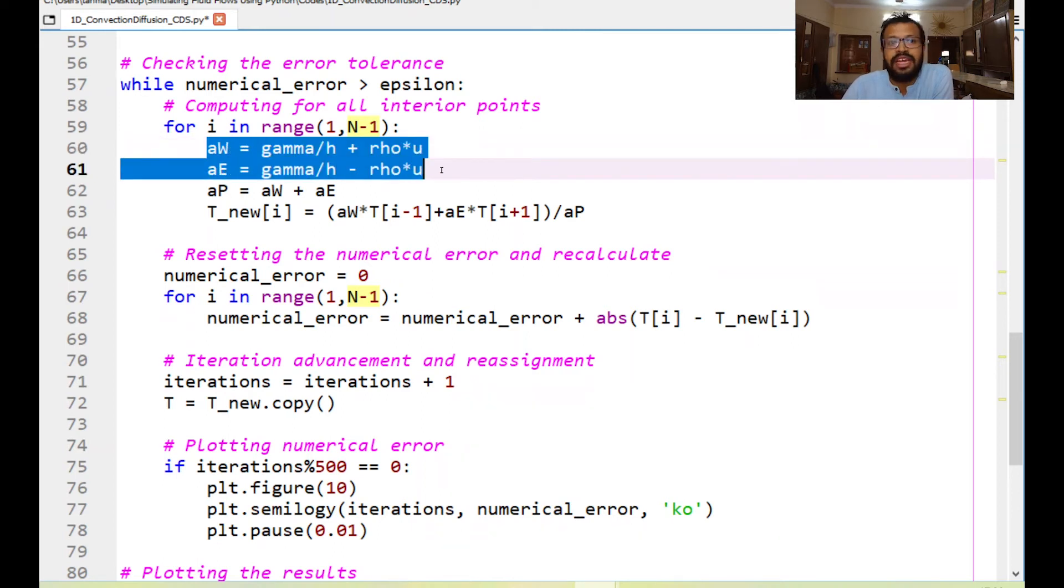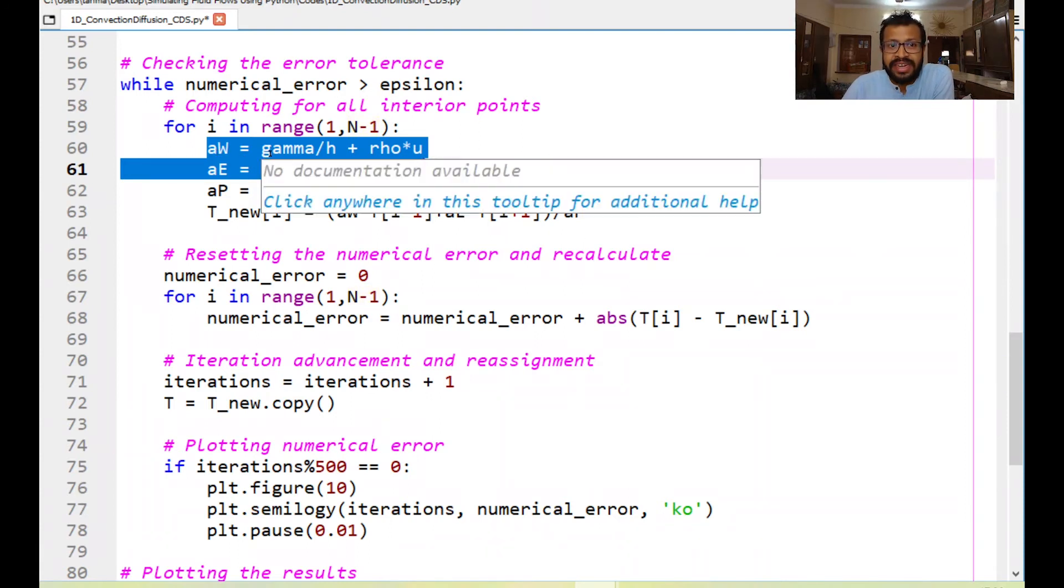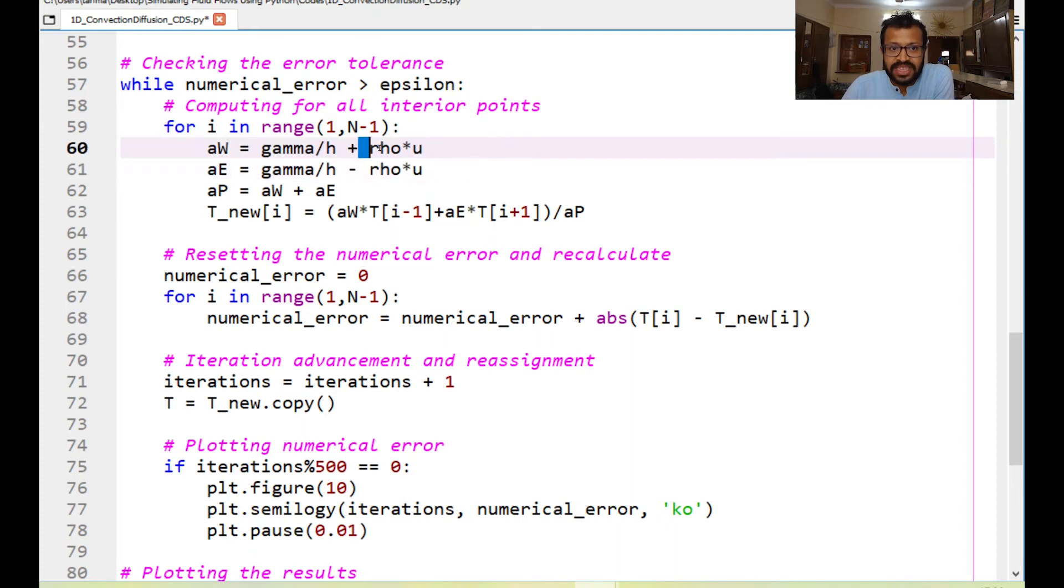So based on the previous lectures the coefficients AW and AE in the convection diffusion scenario are given of this form. AW is D which is gamma over H plus F that is rho into U. I'm sorry I think this should be F by 2 and this should be F by 2 as well. So AE is given as D minus F by 2 and AW is given as D plus F by 2.